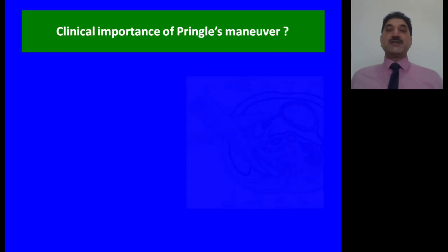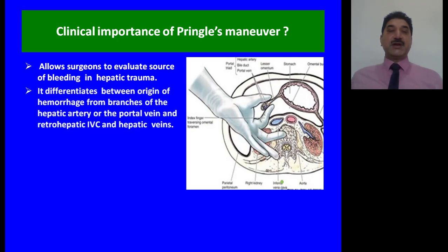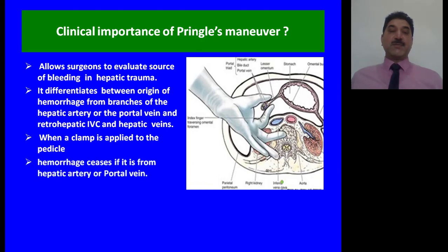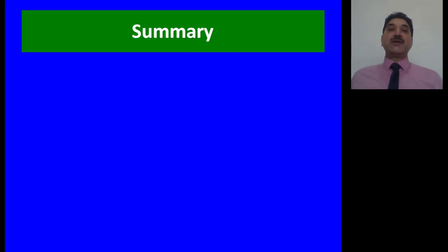Clinical importance of Pringle's maneuver: it allows surgeons to evaluate the source of bleeding in hepatic trauma — whether the origin of hemorrhage is from branches of the hepatic artery or the portal vein, or from the retrohepatic inferior vena cava and hepatic veins. When a clamp is applied to the pedicle, hemorrhage ceases if it is from the hepatic artery or portal vein. If hemorrhage continues, other likely sources include the retrohepatic inferior vena cava and hepatic veins.